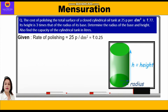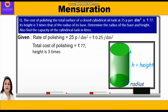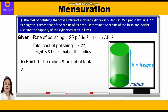Now let's see what is given to us. The rate of polishing is 25 paise per decimeter square. We can convert paise into rupees by dividing by 100, so we get ₹0.25 per decimeter square. The total cost of polishing is ₹77, and height is 3 times the radius. We have to find the radius, height, and capacity.